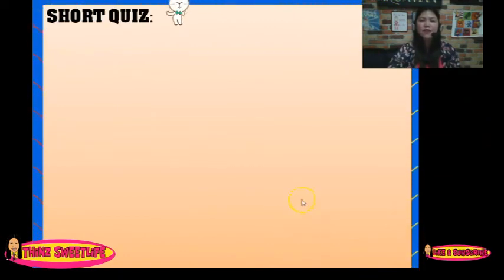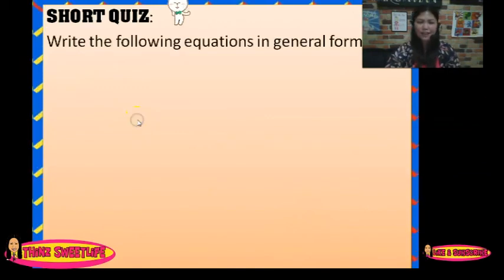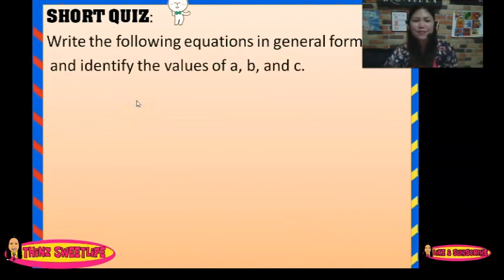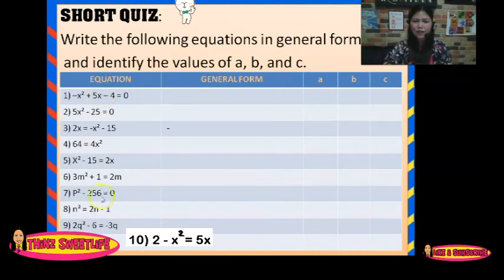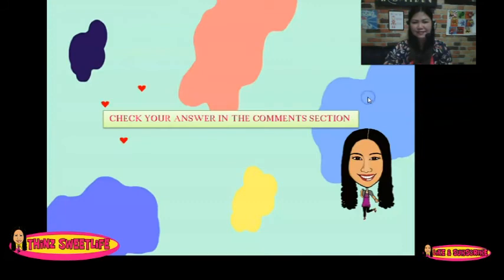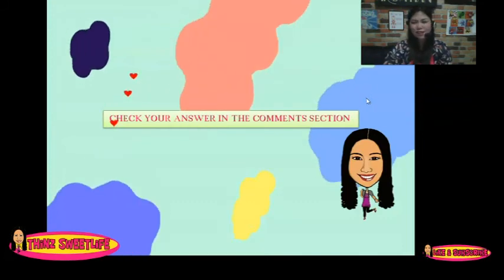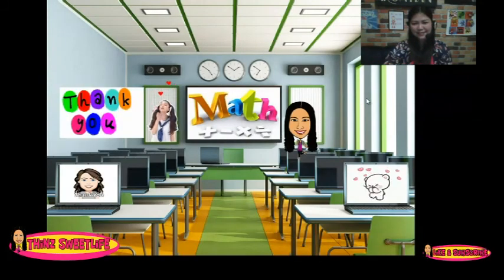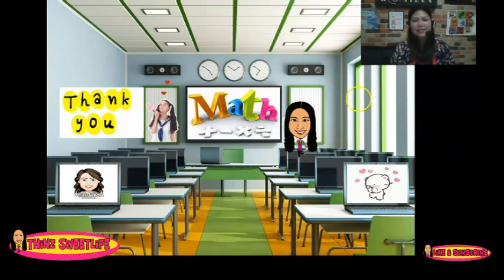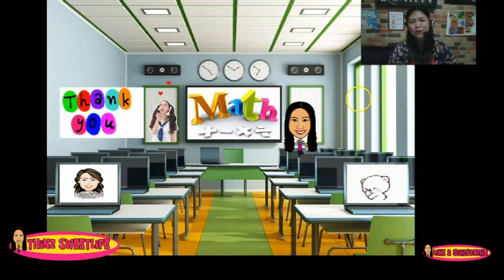You have a short quiz for today. Write the following equations in general form and identify the values of A, B, and C. We have 10 equations. Check your answers in the comment section. Thank you very much for your time. Please like and subscribe to my channel, and don't forget to press the notification bell for more updates.